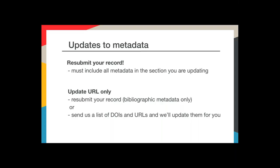URLs are a little bit special. You can update your URLs by resubmitting the bibliographic portion of your metadata record, which is easy for many of our members to do. If it's not easy for you to resubmit your metadata records, you can send us a list of DOIs and URLs and we'll update them for you — send that to our support staff at support.crossref.org.